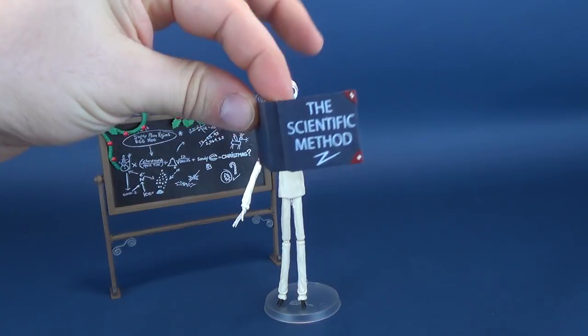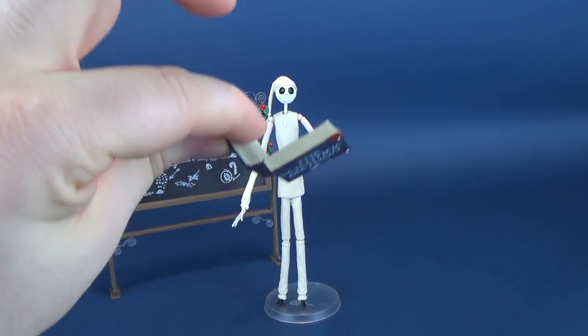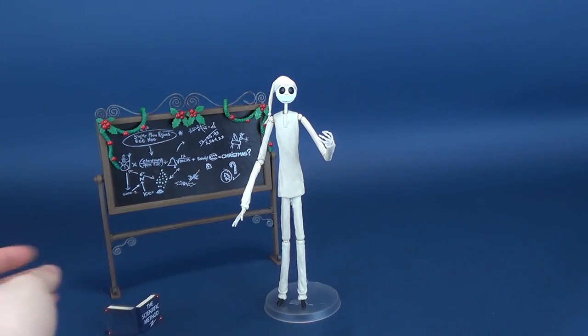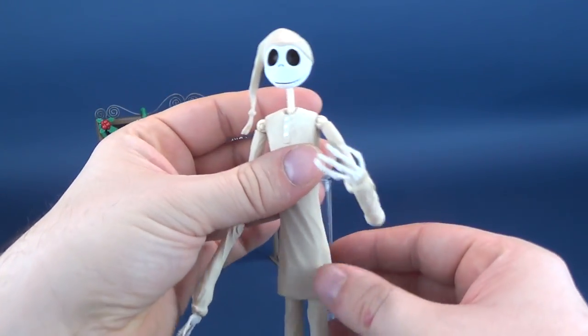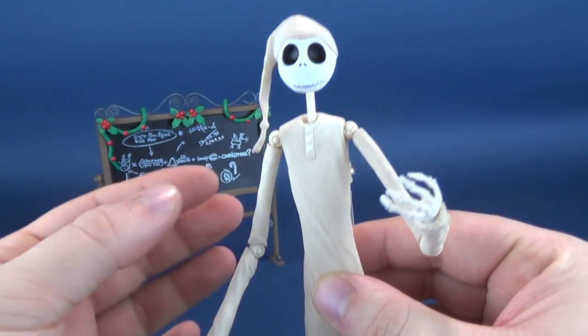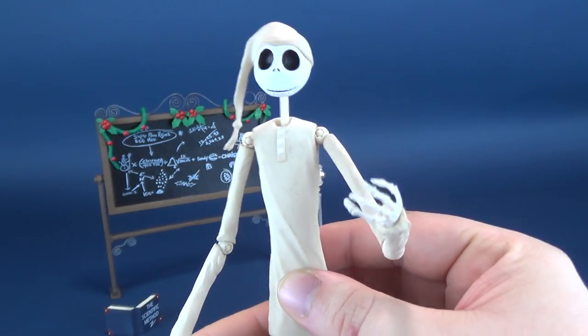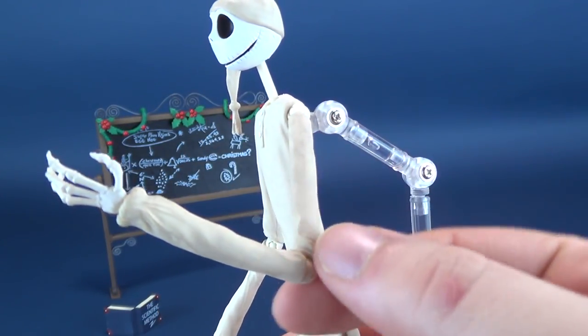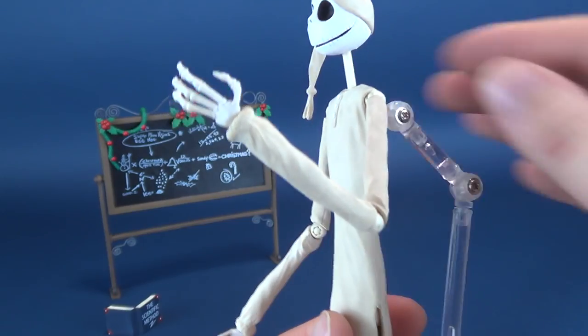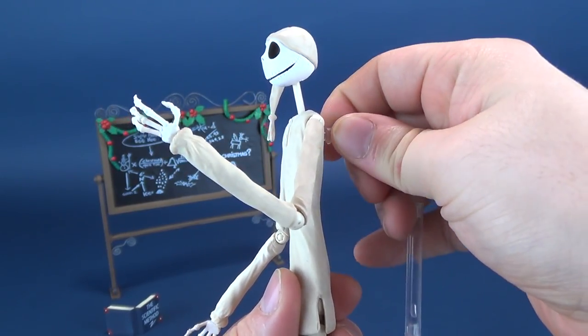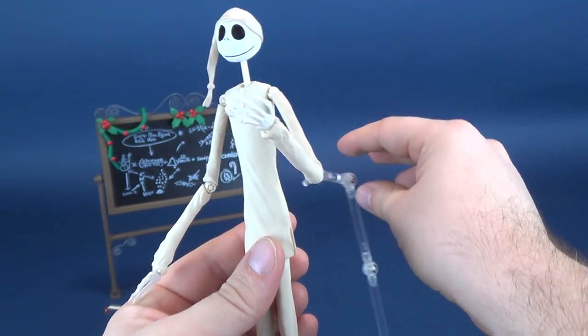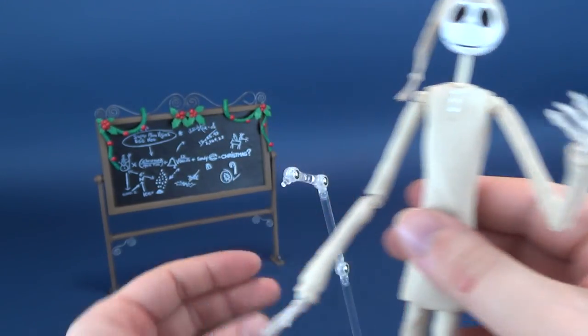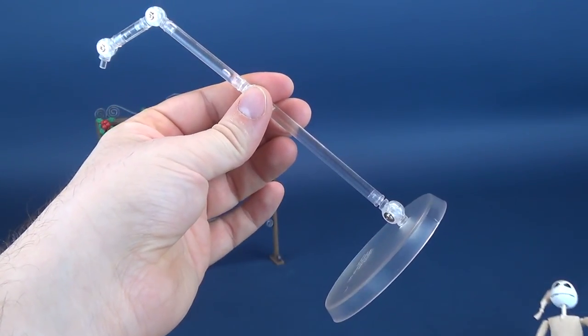So I do appreciate again that we get ourselves a book with Pajama Jack. I just worry long term, if you've had any one of these figures, sometimes their limbs get pretty loose, unfortunately, on them. And Jack being the spindliest of characters that you can get a figure from, I just worry that that's going to be a problem. I think we've talked enough about the book.